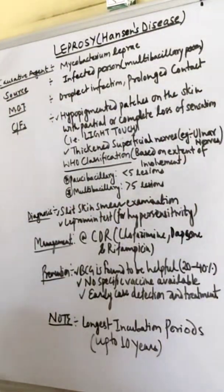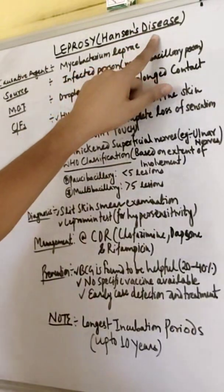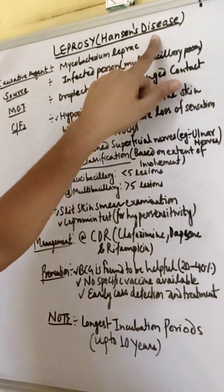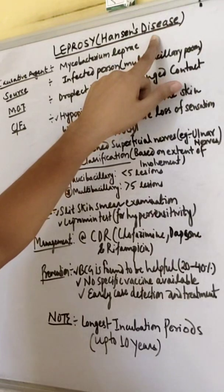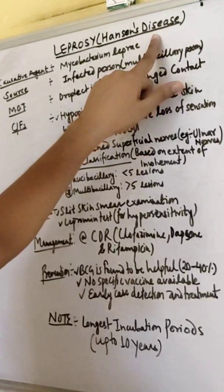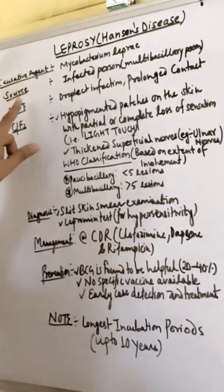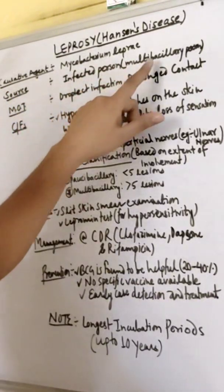Namaste everyone. We are going to discuss about leprosy. Leprosy is also called Hansen's disease because it is named after the discoverer called Hansen who discovered Mycobacterium leprae. The causative agent is Mycobacterium leprae. The source is infected persons with multibacillary disease.